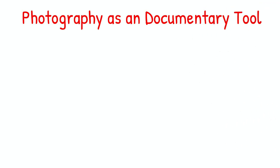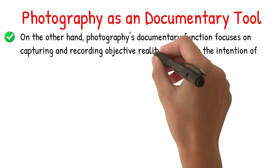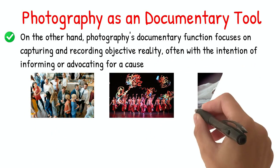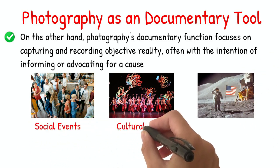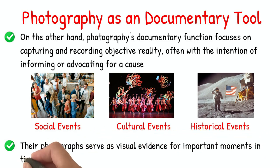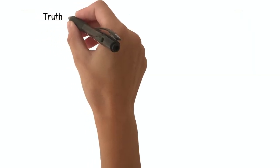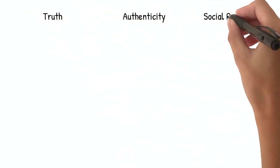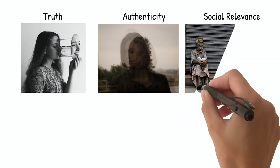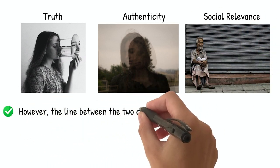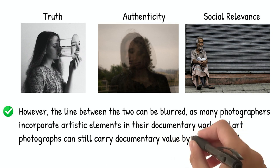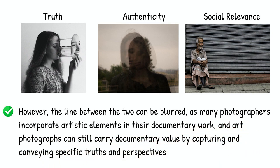On the other hand, photography's documentary function focuses on capturing and recording objective reality, often with the intention of informing or advocating for a cause. Documentary photographers aim to present an accurate and unbiased depiction of social, cultural, or historical events. Their photographs serve as visual evidence for important moments in time. While art photography prioritizes individual expression and aesthetic exploration, documentary photography emphasizes truth, authenticity, and social relevance. However, the line between the two can be blurred, as many photographers incorporate artistic elements in their documentary work, and art photographs can still carry documentary value by capturing and conveying specific truths and perspectives.